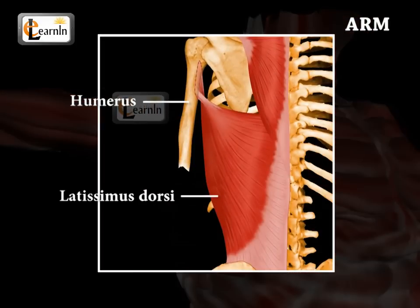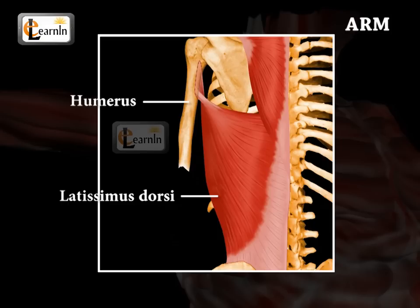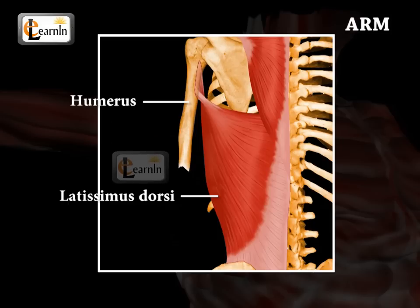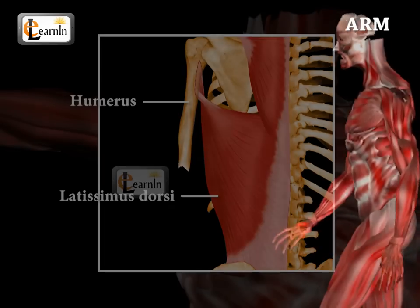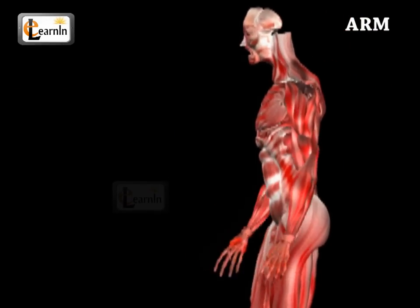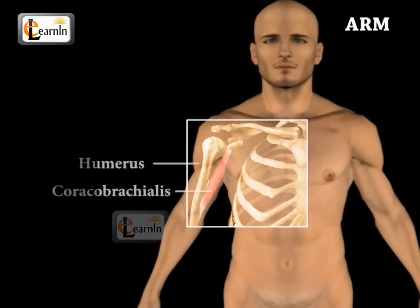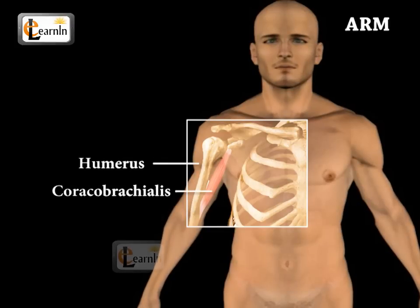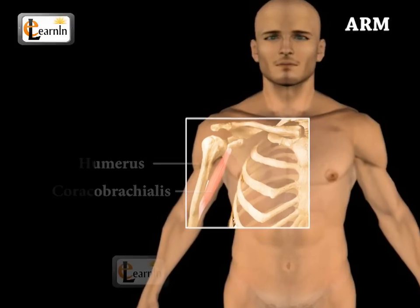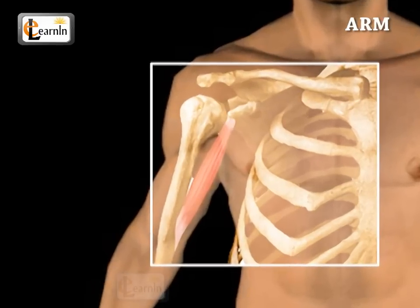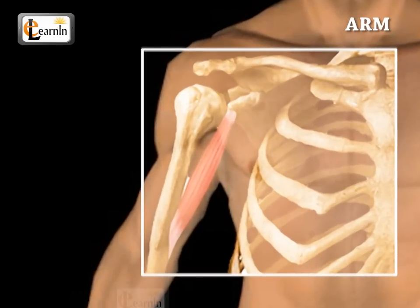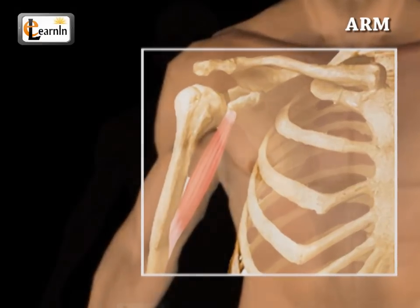The latissimus dorsi is the chief muscle that helps in lowering the arm. The latissimi dorsi, which is a combination of these muscles, runs from the back in a forward and upward manner and also passes through the sides of the chest wall. The coracobrachialis is attached to the middle of the front part of the humerus, and is an elongated narrow muscle that runs along the middle of the arm.